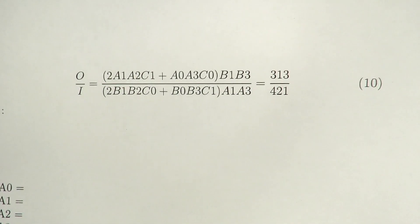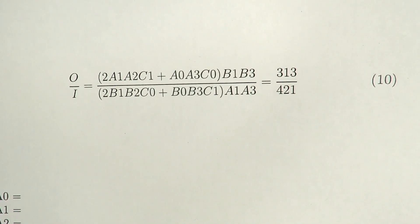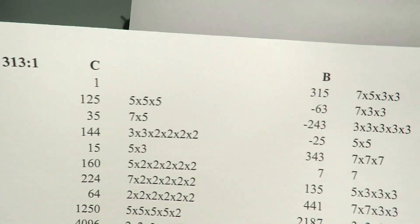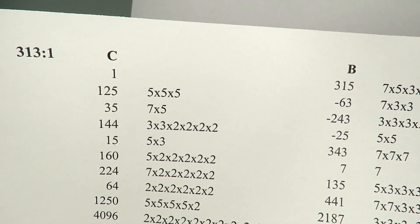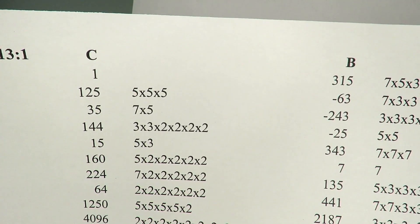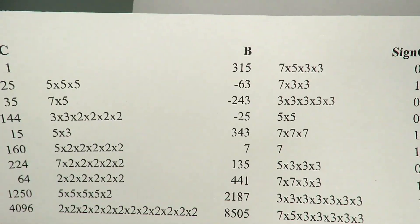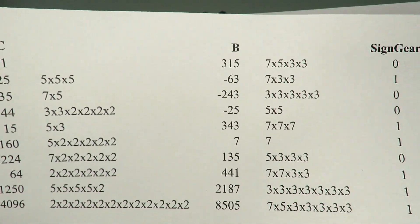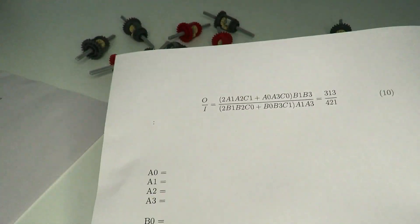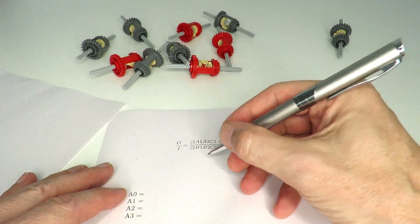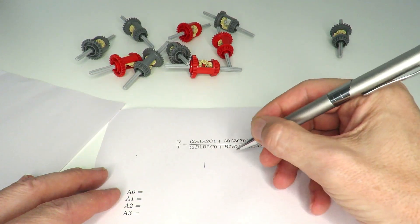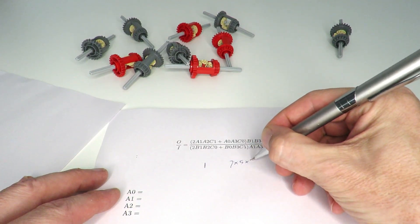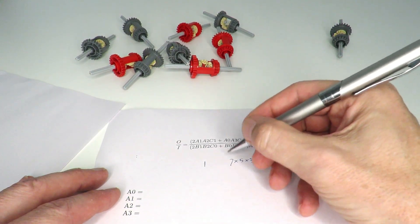First, we find all possible solutions for the 313 gear ratio and pick the top one: C = 1 and B = 315, which is 7 × 5 × 3 × 3. I'll write that down — we've got 1 and 7 × 5 × 3 × 3.